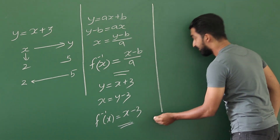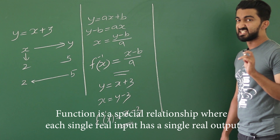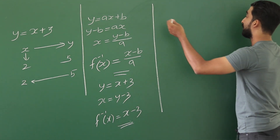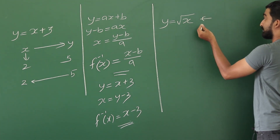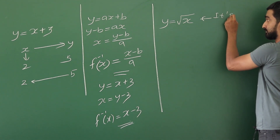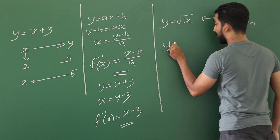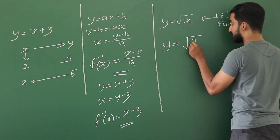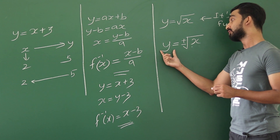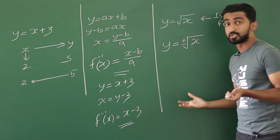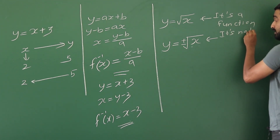When finding an inverse function you must know the definition of a function. A function is a special relationship where each single real input has a single real output. If you have y equals root x, this is a function because root x is always positive. But if you have y equals plus or minus root x, that means x gives two real outputs, which is contradictory to the definition of a function. So we must say this is not a function.